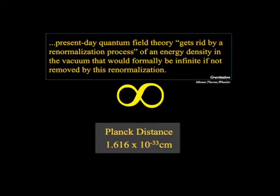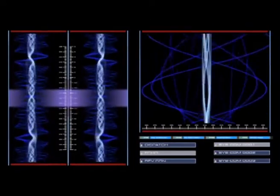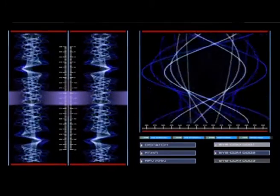The Planck's distance is supposedly the smallest thing the universe does. You could think of it in a really simple term as the time or the distance it takes a photon to go across itself. It's the smallest wavelength the universe is supposed to be able to do.